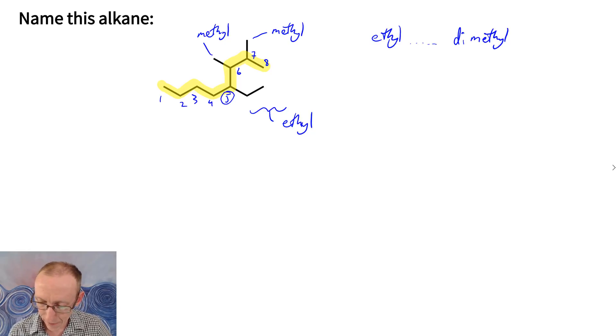If we number from the other direction though we would be going in red now 1, 2, 3, 4, 5, 6, 7, 8 and now we're getting to the first substituent at the 2 position. So that numbering scheme is going to win. So in this case this will be numbered according to these red numbers starting from the right-hand side and working towards the left.